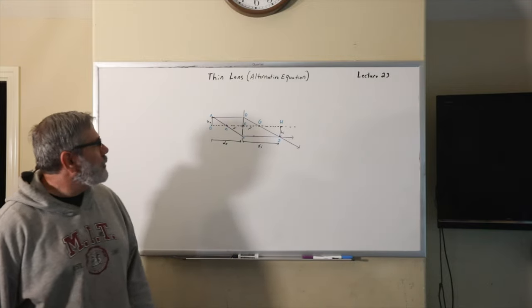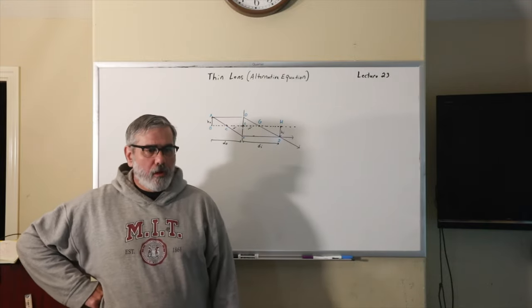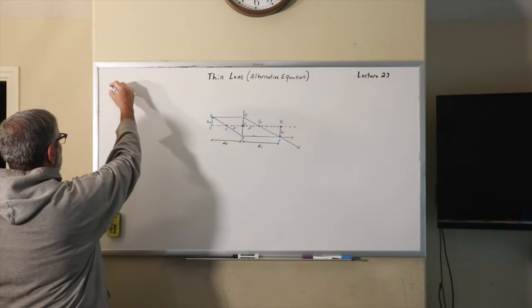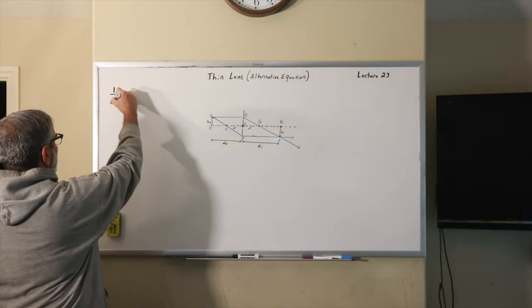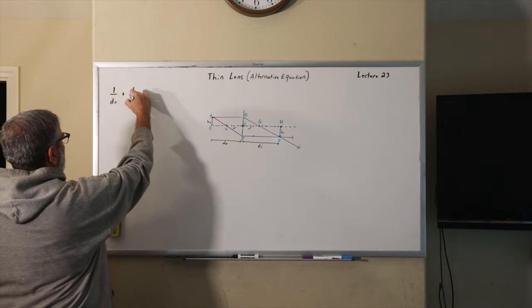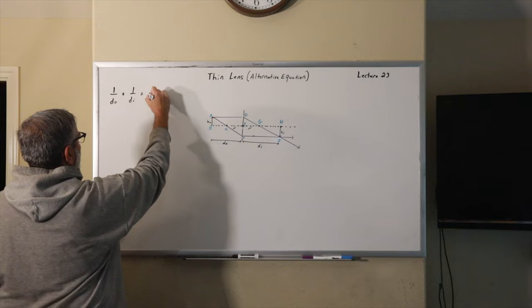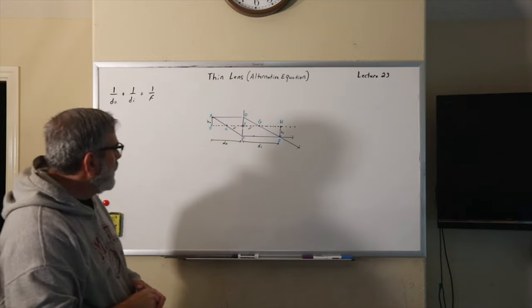Okay, so lecture 23, we're going to go about thin lenses and alternative equation. You'll remember that the usual equation that we use is that 1 over DO plus 1 over DI, that's the distance of the image, is equal to 1 over the focal length of the lens.